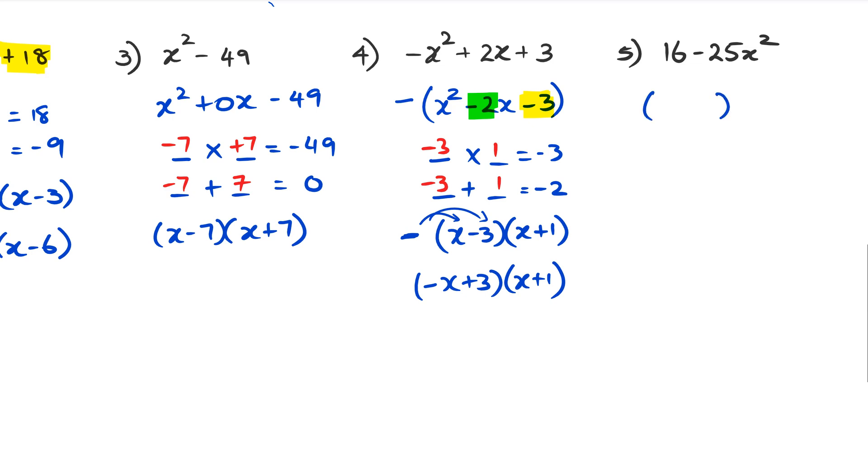We can just straightaway look at this and go, well this is going to be difference of two squares. So we're straightaway going to put in that first number, the square root of 16 which happens to be 4. And we know that with difference of two squares we're going to have minus and plus.